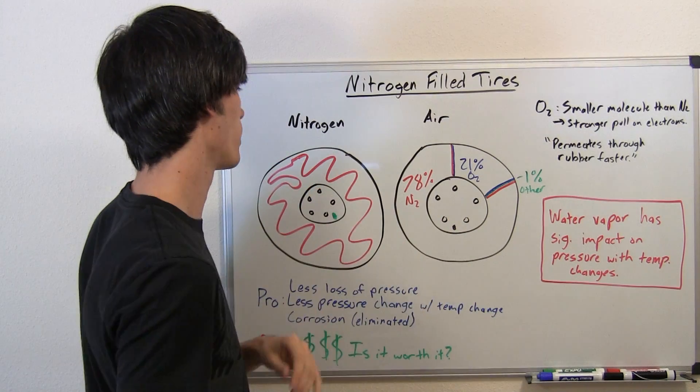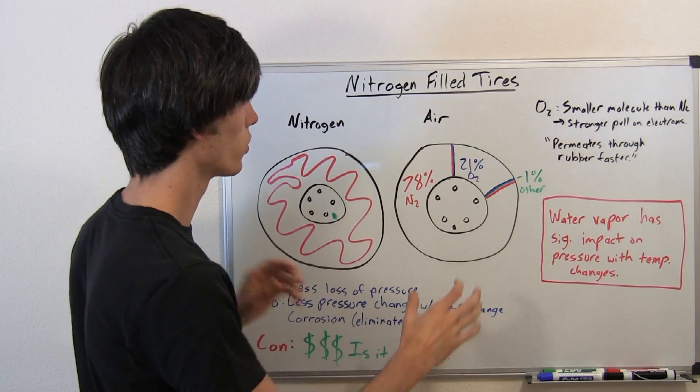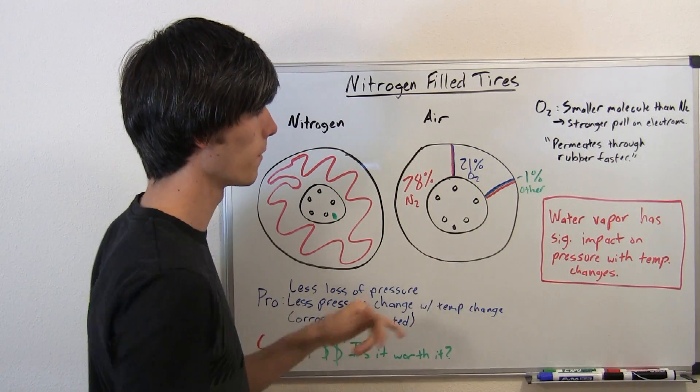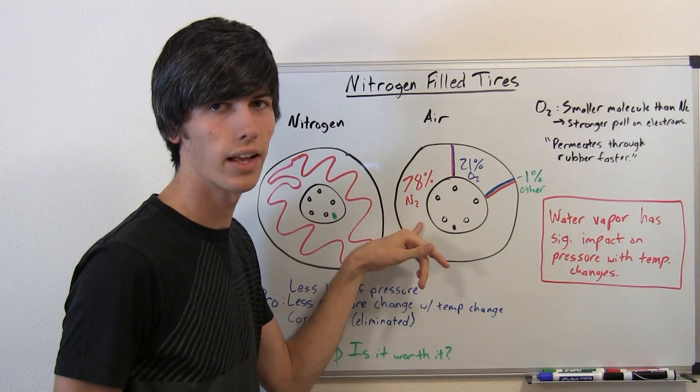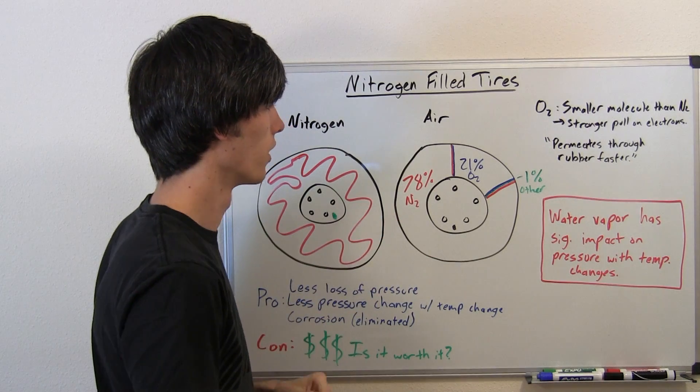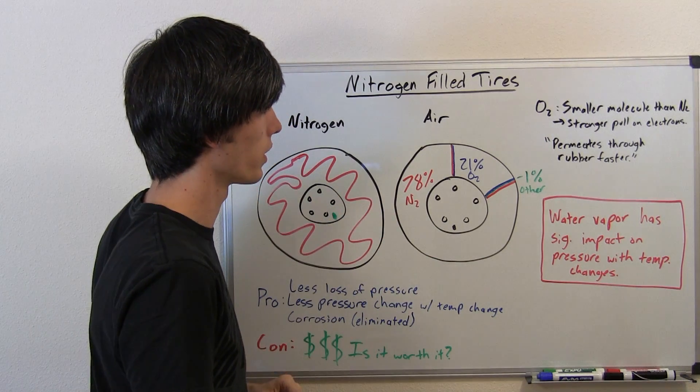So I've got two tires here, we're just going to go over some of the facts. If you have an air-filled tire, 78% of that air is nitrogen. So you're already almost filling your tire with nitrogen.